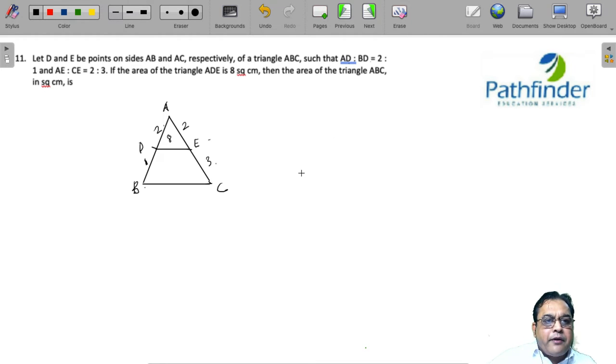You have to calculate the area of triangle ABC. Let's say this angle is theta. So area of triangle ADE will be equal to 1/2 × AD × AE × sin(theta), and this is given to us as 8 square centimeters.